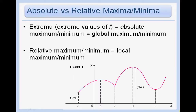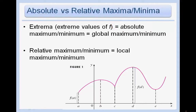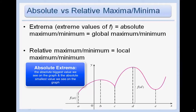For now let's just discuss the definitions. Extrema, or the extreme values of a function, are just the absolute maximum or minimum — in other words, the global maximum or minimum. These terms all refer to the same concept: finding the absolute biggest and absolute smallest values we see on the entire graph.